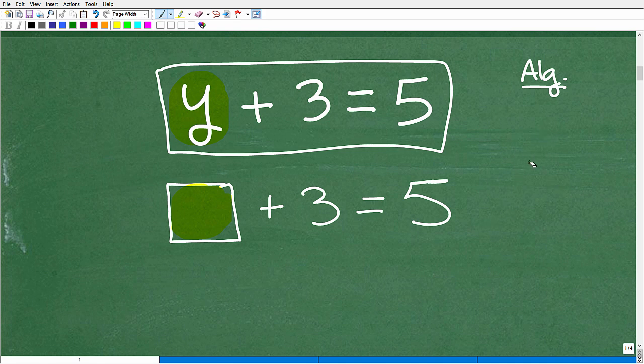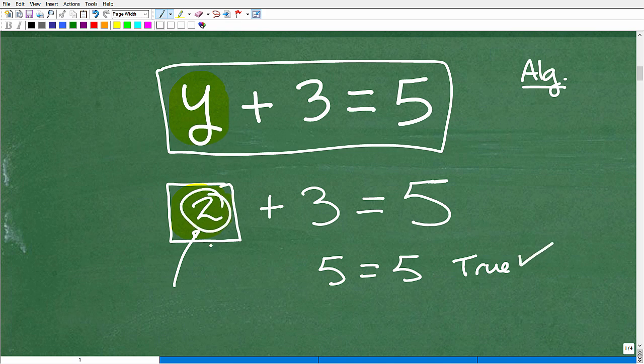you know, the problems in obviously in algebra get more challenging, but the mechanics, you know, or the objectives are effectively the same. We're trying to figure out what is the value that goes into this box that makes this statement true. And of course, when I plug in two here, two plus three is five. Five equals five is true. Okay.